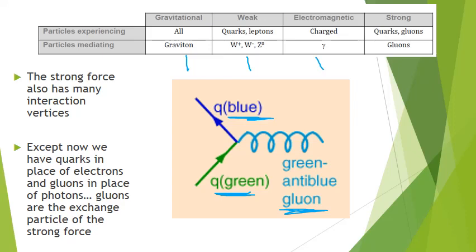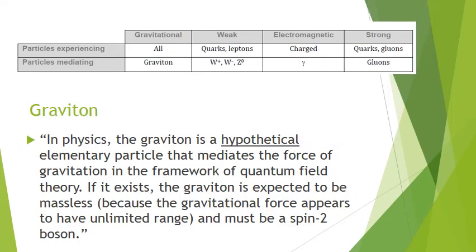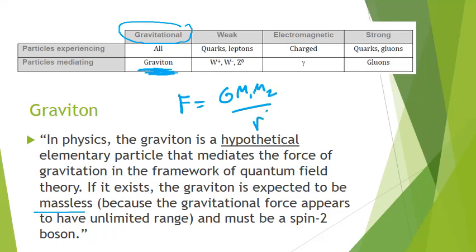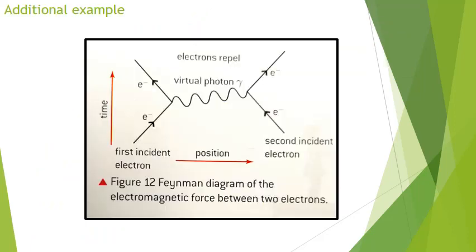The exchange particle for the gravitational force is a hypothetical particle called the graviton. If it exists, it's expected to be massless and have a spin. With the gravitational force, the force equals G times m1 times m2 over r squared — forces between masses. In terms of the standard model, how the gravitational force fits in is still tough and being worked through.